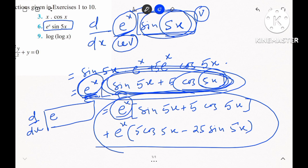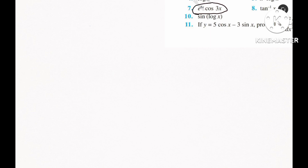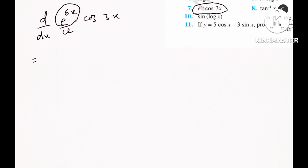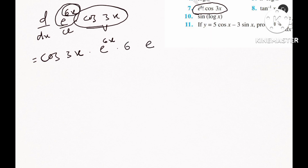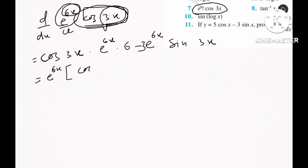For e to the power 6x times cos 3x, we use the u times v product rule method. Here u is e^(6x) and v is cos 3x. Applying the formula: derivative of e^(6x) is e^(6x) into 6, and the derivative of cos 3x is minus sin 3x times the derivative of 3x, which is 3.